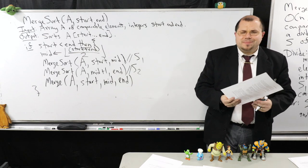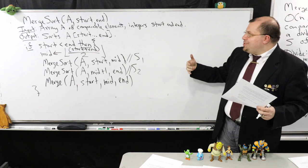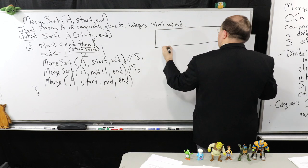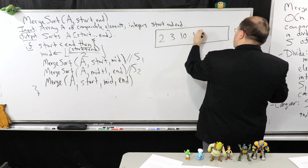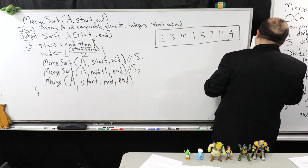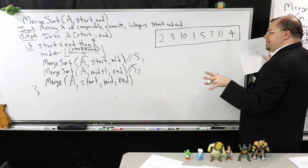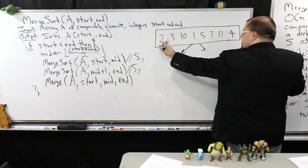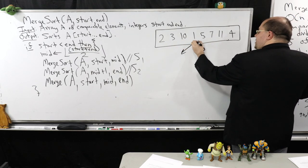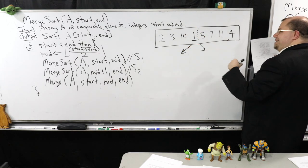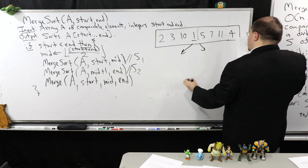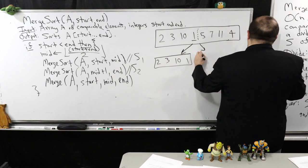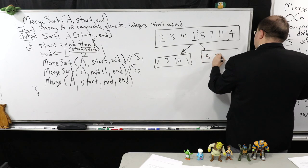Let's do an example with Merge Sort using the same input array as last time: 2, 3, 10, 1, 5, 7, 11, and 4. Remember, in this process, I don't have a pivot — Merge Sort doesn't have this. So I take my eight elements, find the middle, and break it into two chunks: 2, 3, 10, 1 and then 5, 7, 11, 4. The same idea applies recursively — I would figure out the middle position. The left half occurs first all the way down before we approach the right half, because the first recursive call processes S1 first.